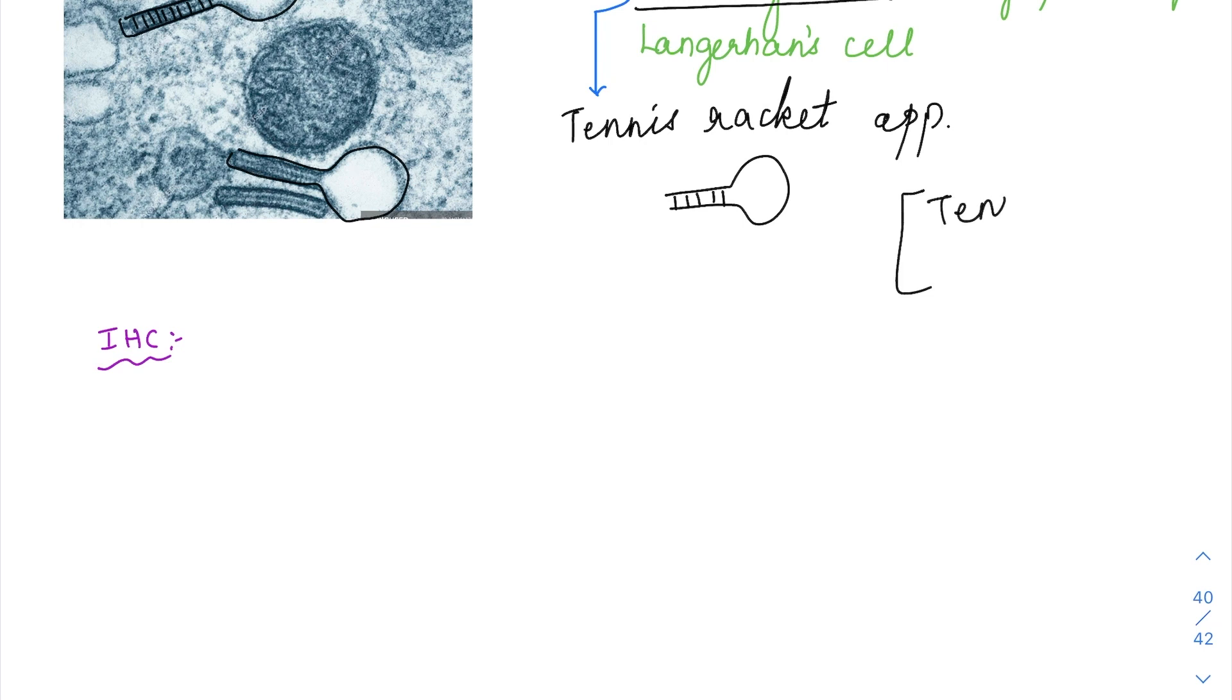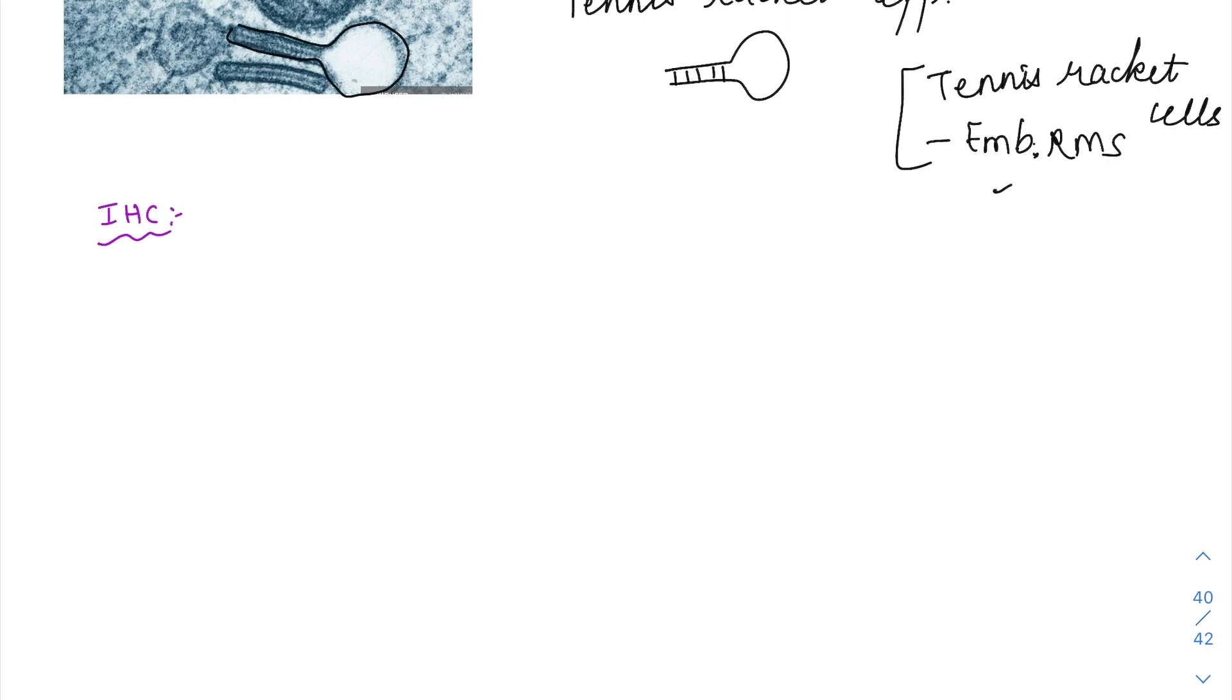Do not confuse it with the tennis racket cells. Tennis racket cells are going to be seen in embryonal rhabdomyosarcoma. There you are going to have strap cells or this tennis racket cells. They are going to have this appearance. This cell is again going to appear as if it is a tennis racket. Tennis racket cells are seen in embryonal rhabdomyosarcoma while tennis racket appearance is going to be seen in electron microscopy of LCH because of the Birbeck's granules present inside them.